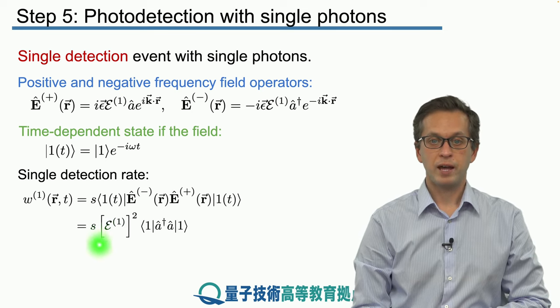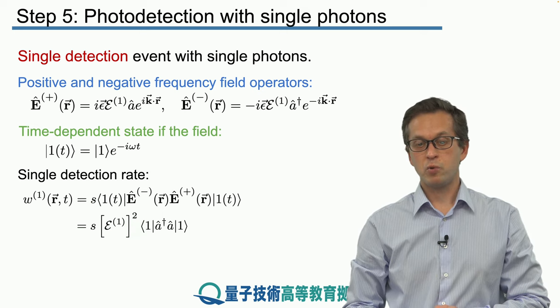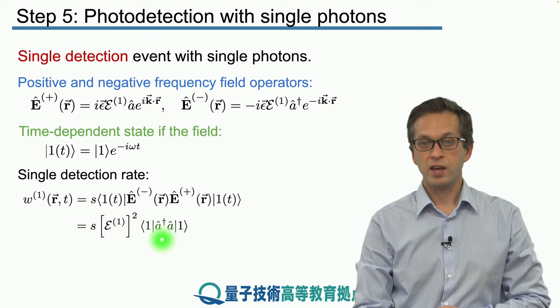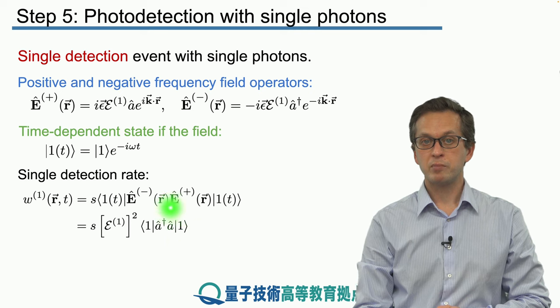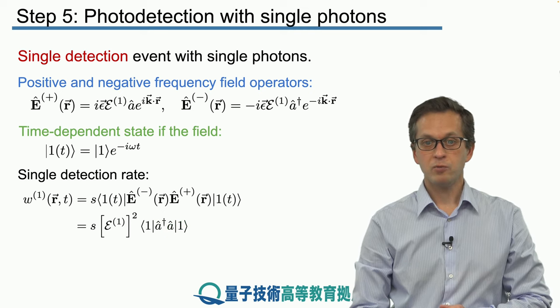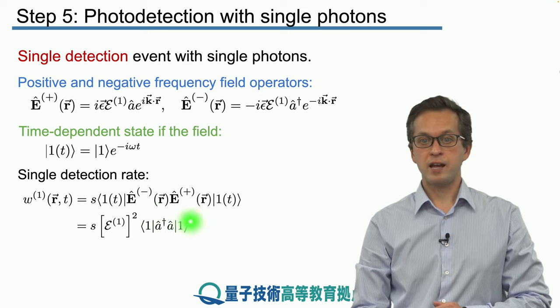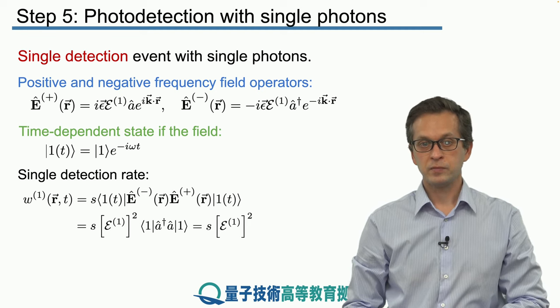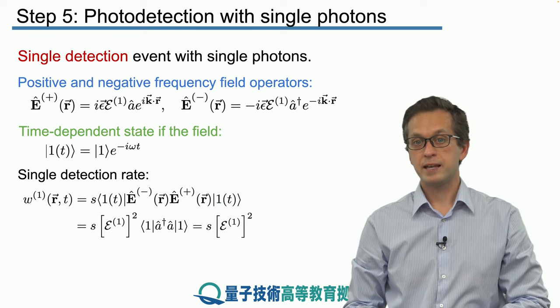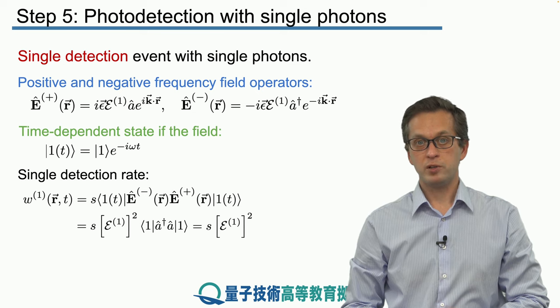So what we are left with is the following expression. W1 is equal to s times the 1 photon amplitude squared, and then the average of a dagger a with respect to the number state 1. And we know immediately what that is, a dagger a acting on 1 is just 1. Therefore, w1 is equal to s times 1 photon amplitude squared.